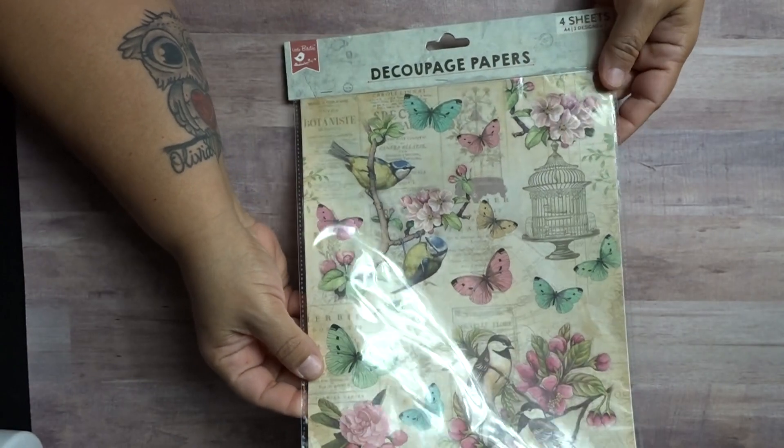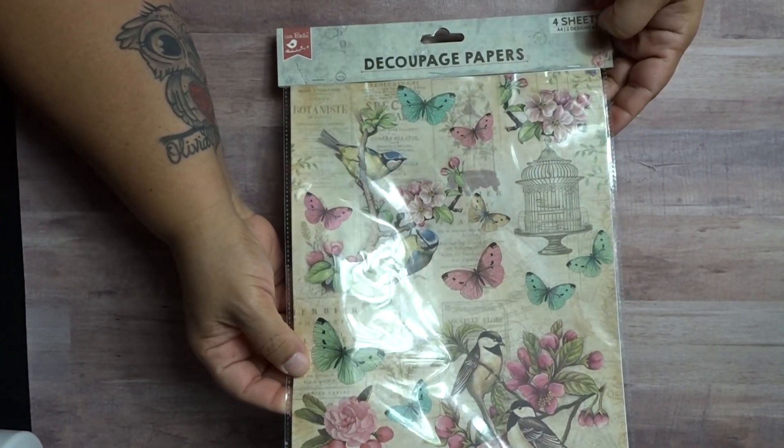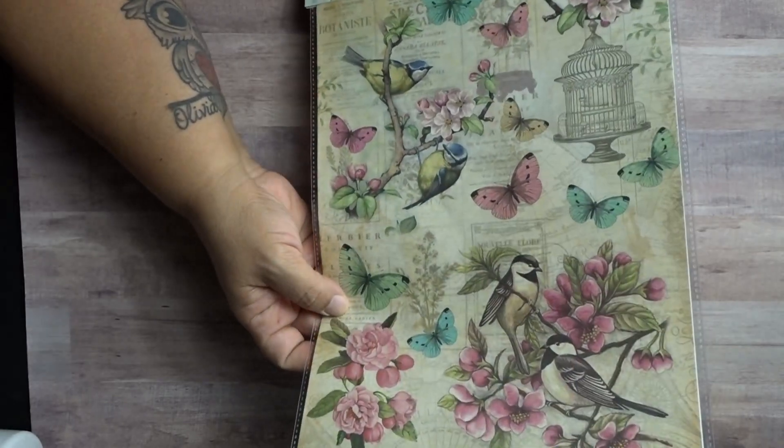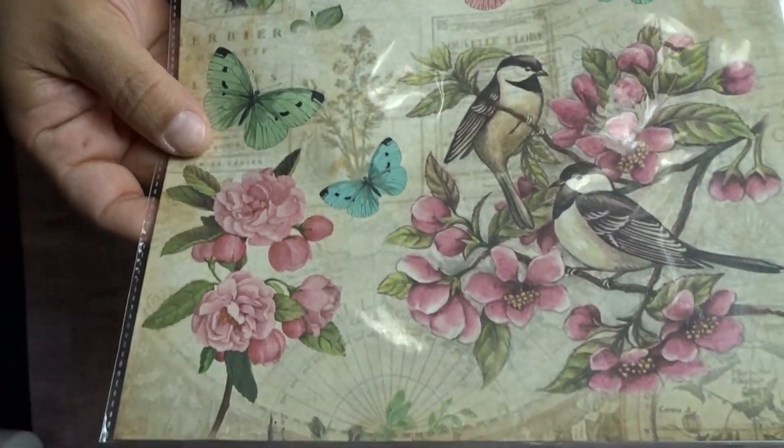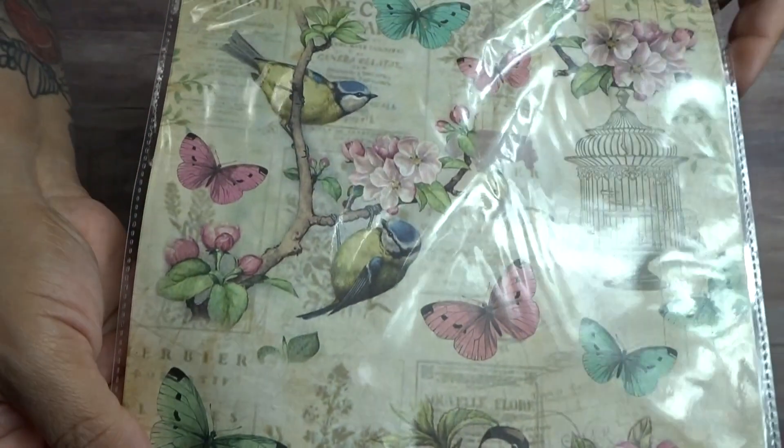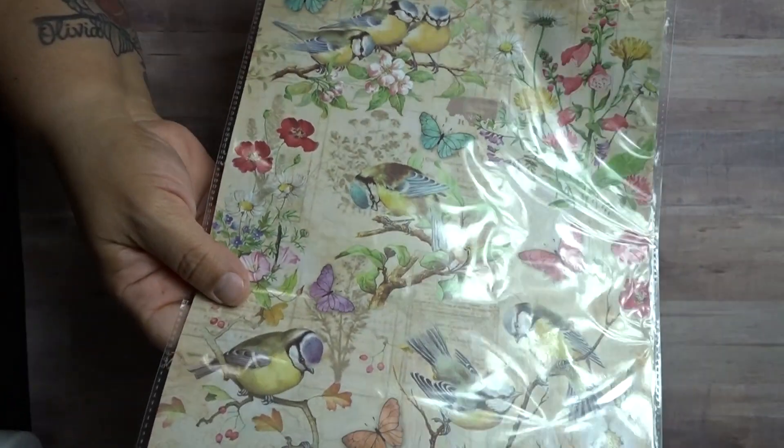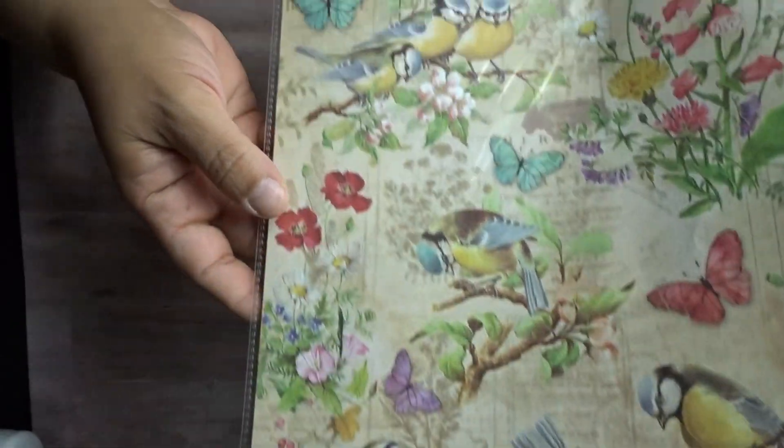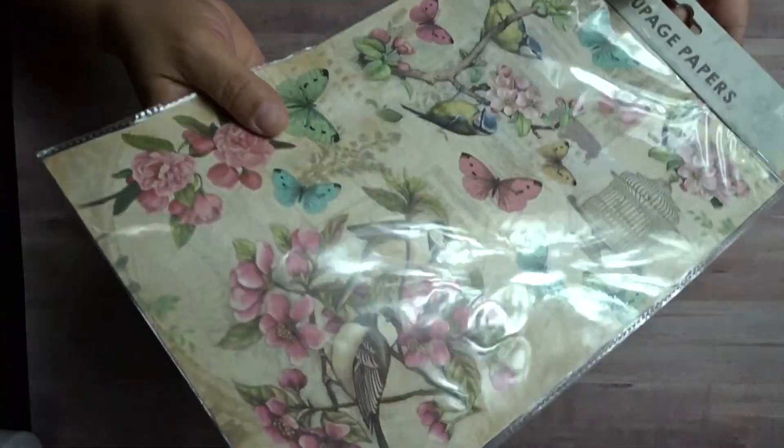They had this rice paper and it's called a decoupage paper. It comes with four sheets. Look at that, isn't that pretty? I have a couple boxes that I plan to cover up and it has different little birdies on them. Isn't that pretty? So I got that.